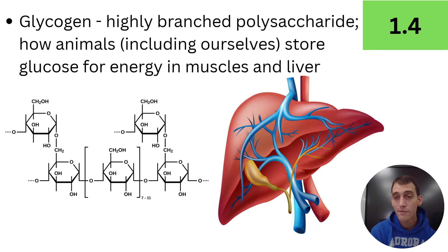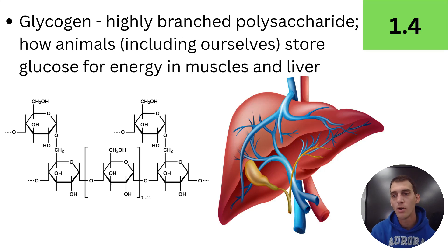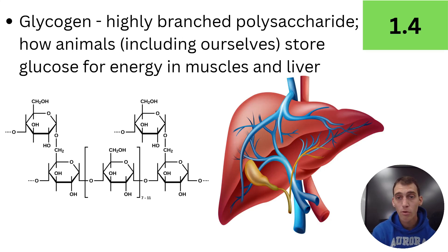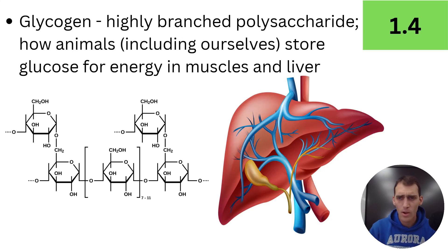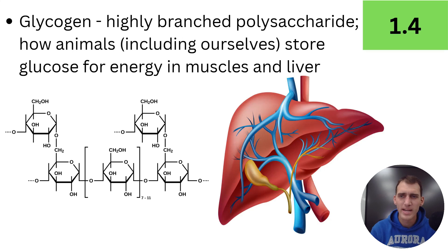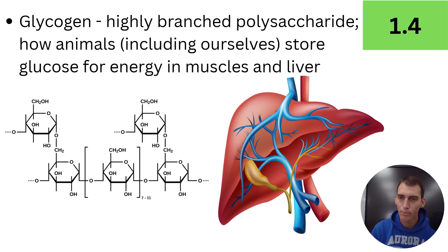The energy storage polysaccharide in animals, fungi, and some bacteria is called glycogen, and it is highly branched. This is how animals, including ourselves, store glucose for energy in our muscles and in our liver. I have a distance running background — I'm a cross country coach and former college track and cross country athlete — and something we did a lot was carbo-cramming, eating a whole bunch of starch before a race so our bodies could break it down and reassemble it through dehydration synthesis into glycogen, stored in your muscles. When it's race time, your muscles have a deep pool of glycogen to tap into for glucose when you need energy.